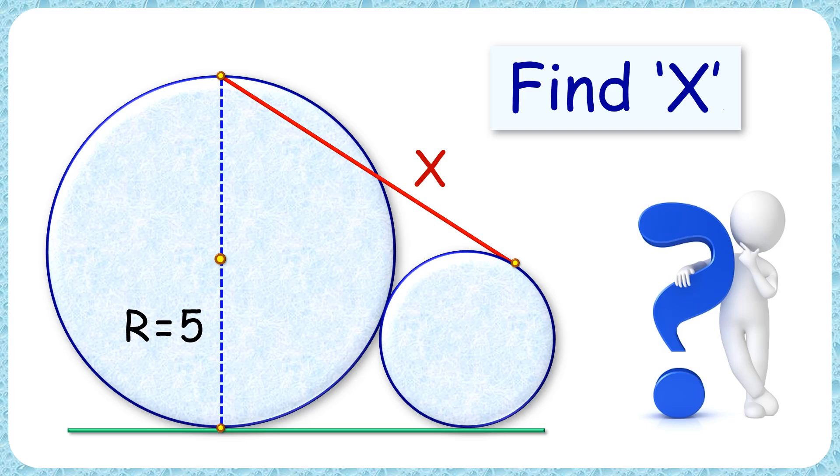Welcome everyone to this interesting question where two circles are given which are touching each other. The radius of the bigger circle is 5 centimeters, the smaller circle radius is not known. With this limited data we have to find the length of this red line segment which is tangent to the small circle.